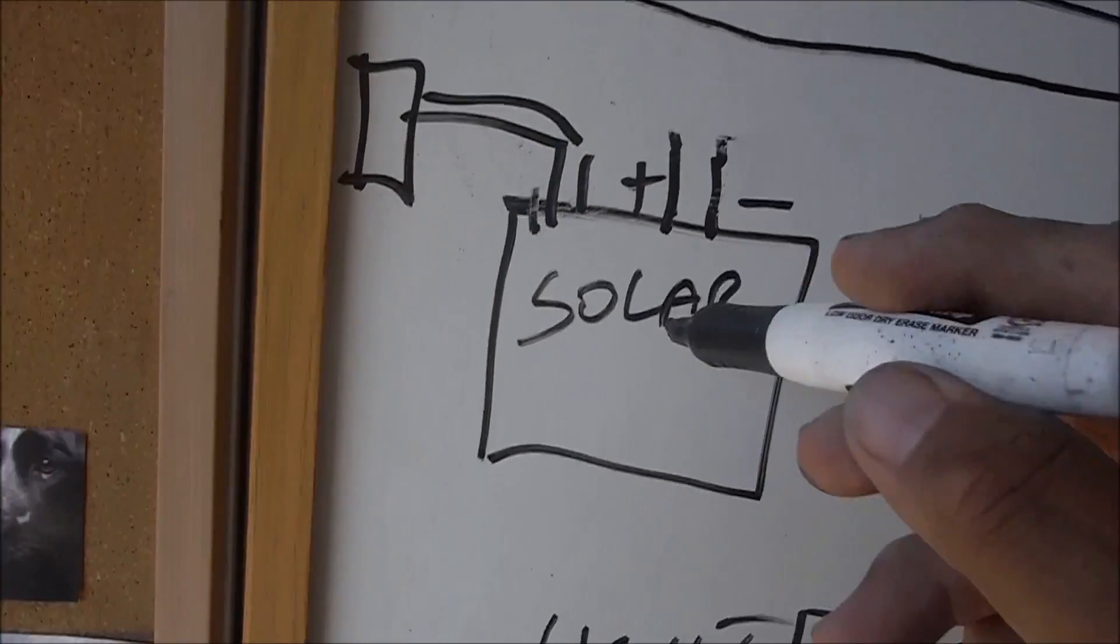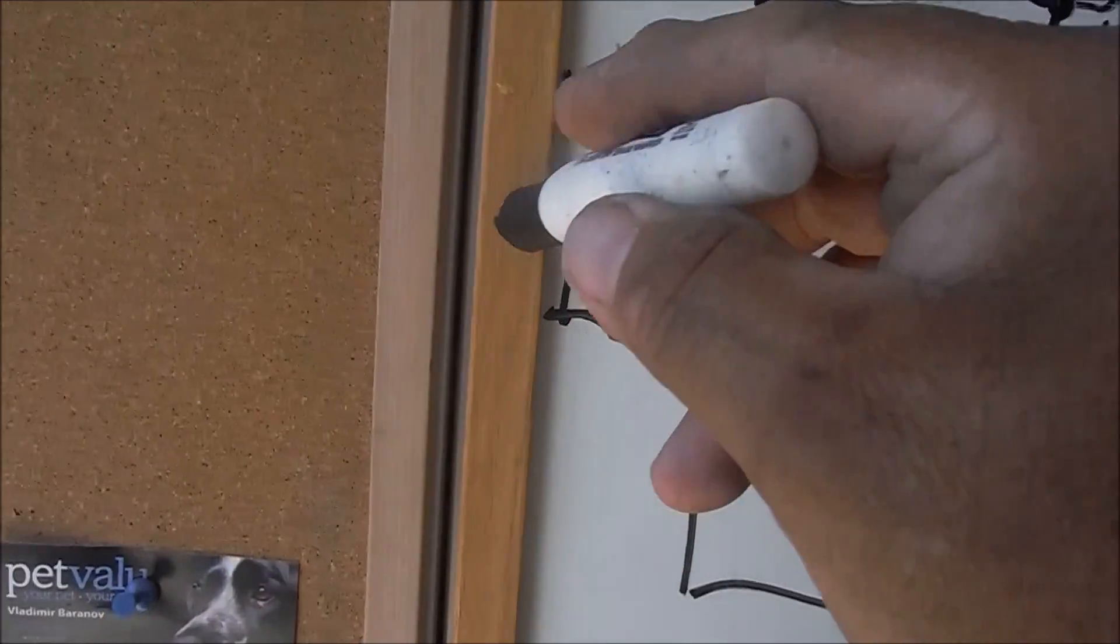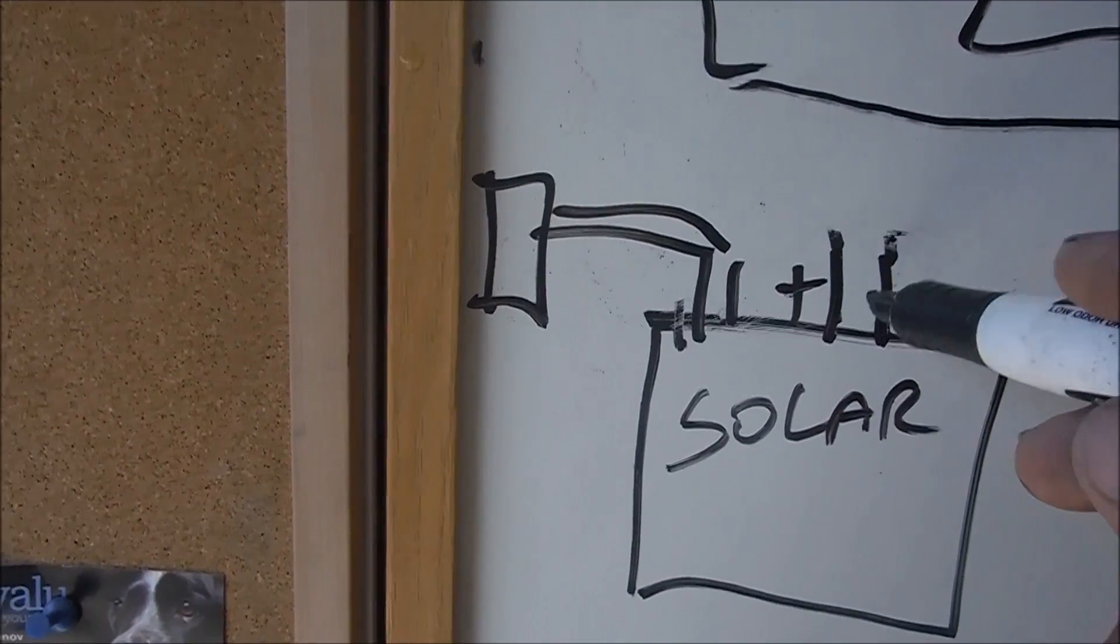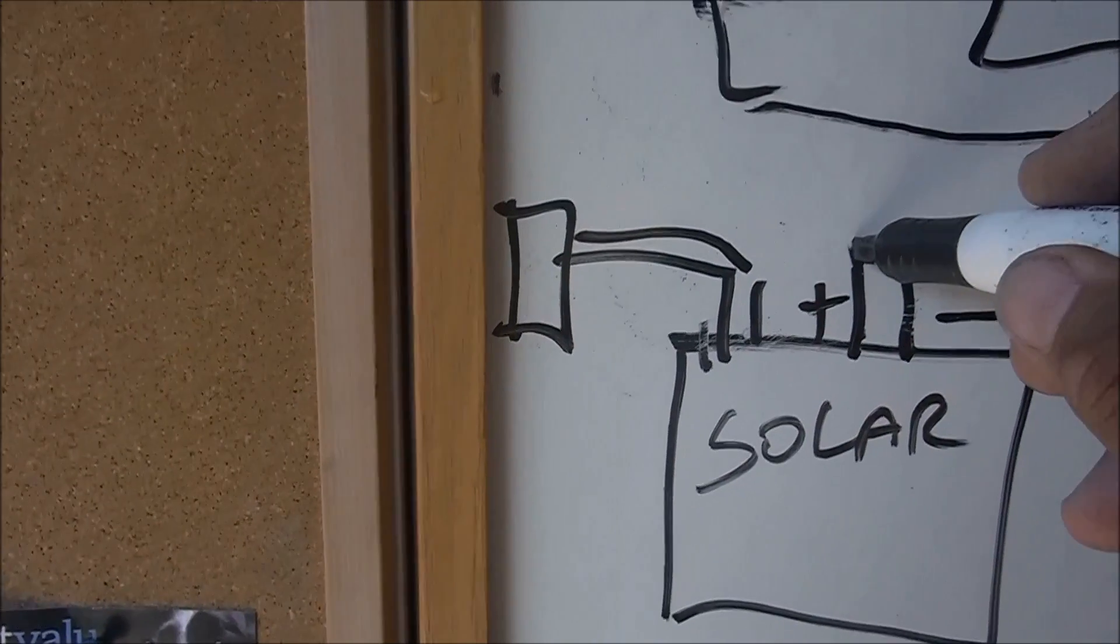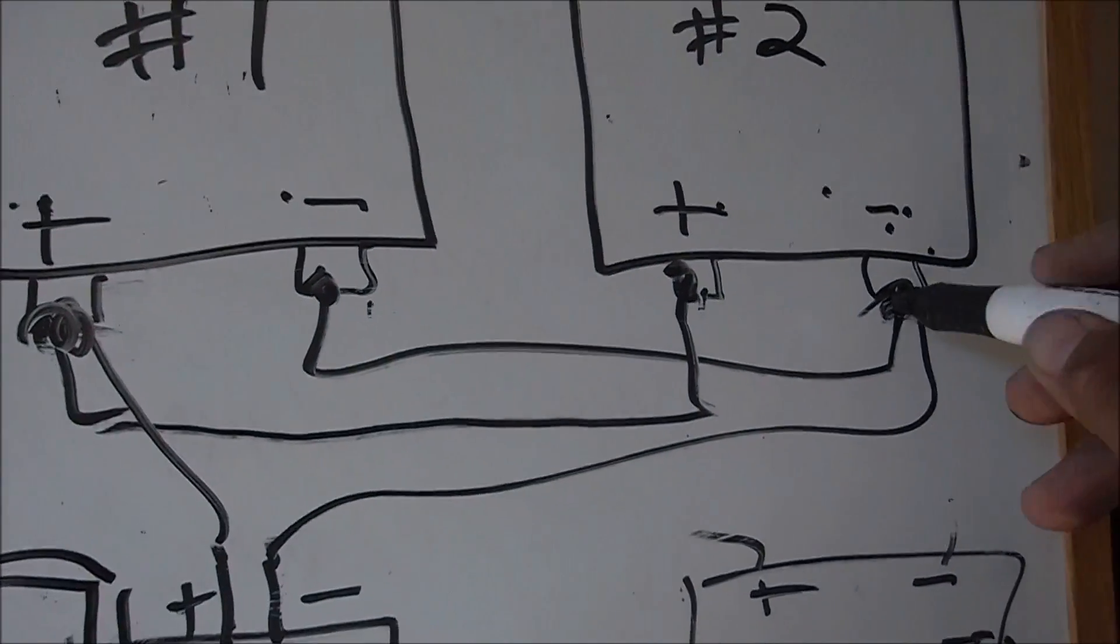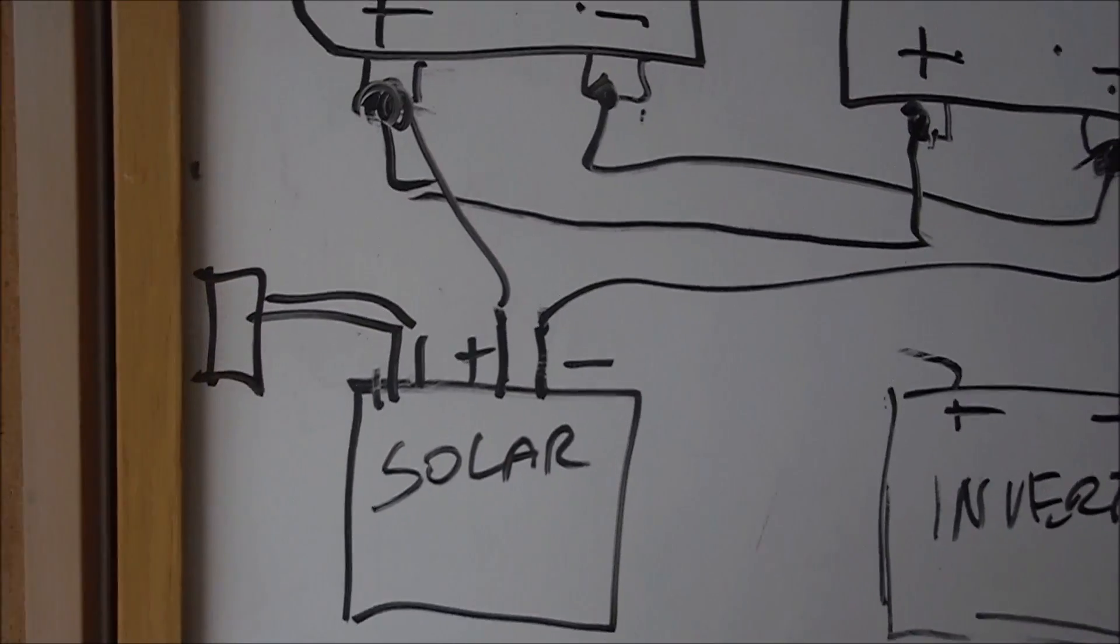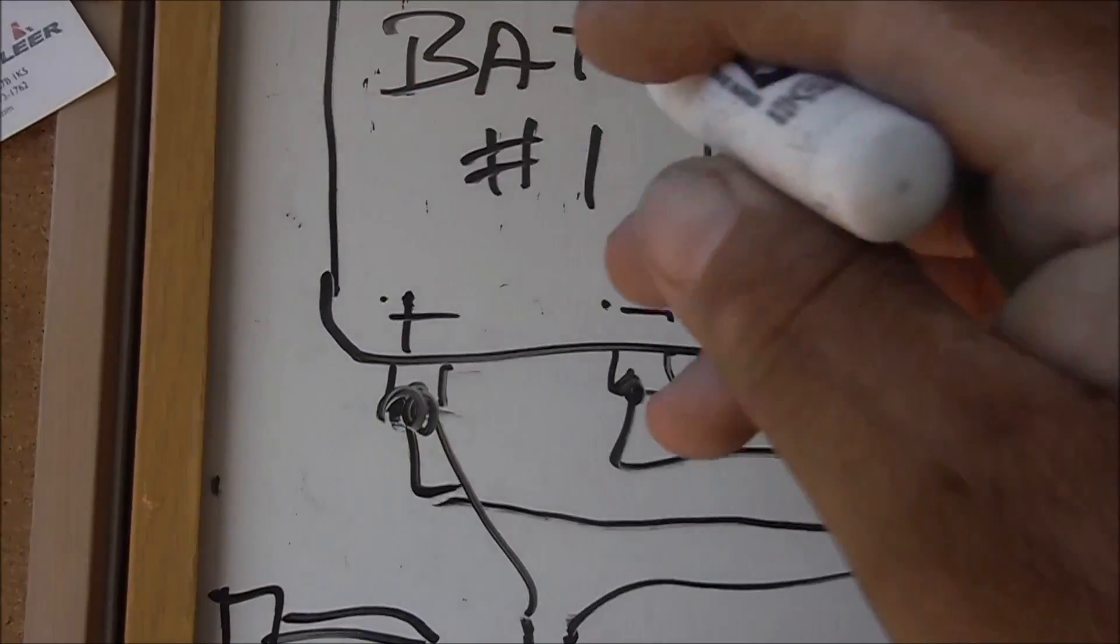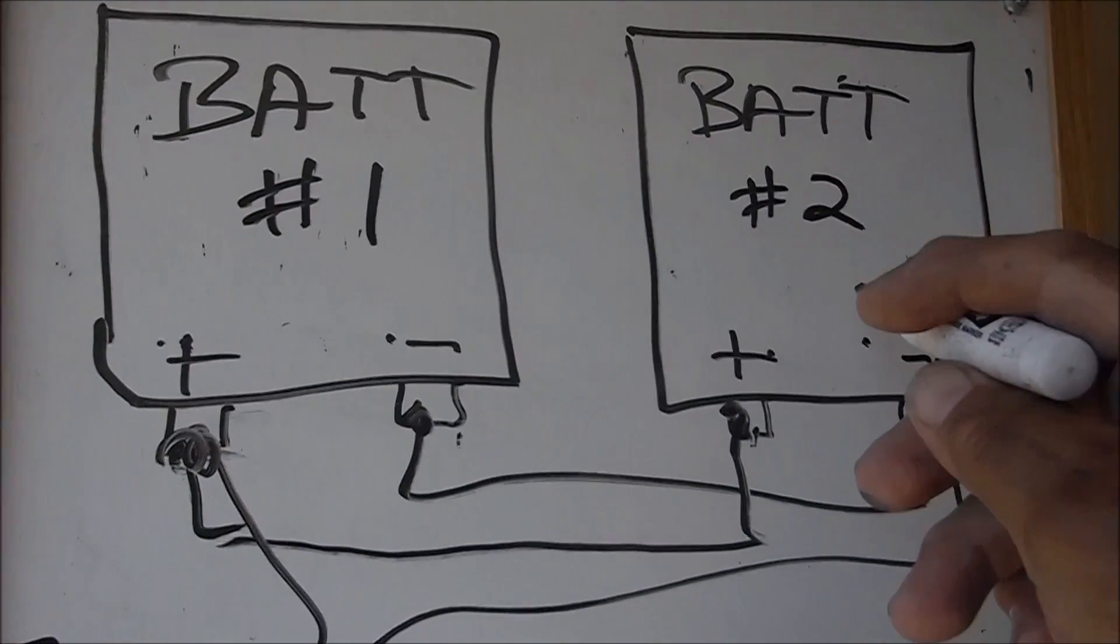So I have my solar panel regulator. These two wires go to the solar panel, and these are the chargers. So the positive here, I went to one battery, and negative went to the other battery. Simple, right? So I'm basically using a positive or negative from one, positive or negative from the other.